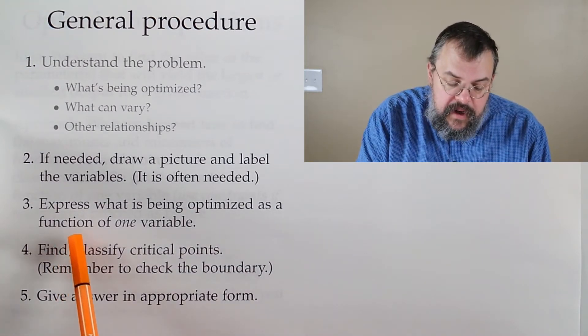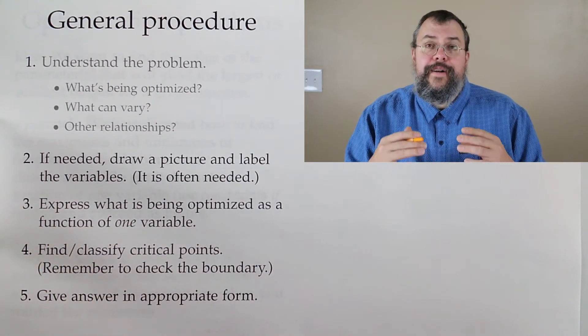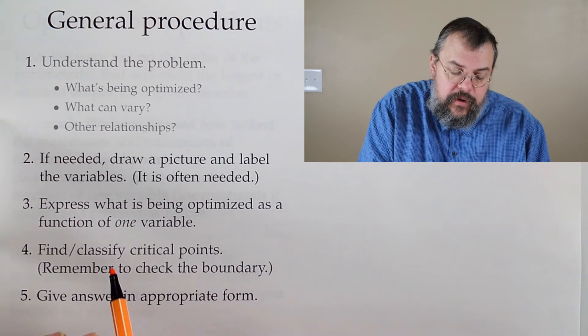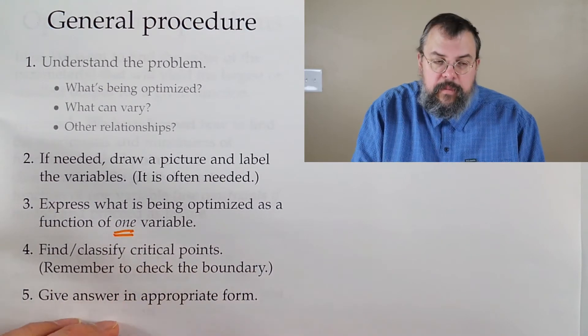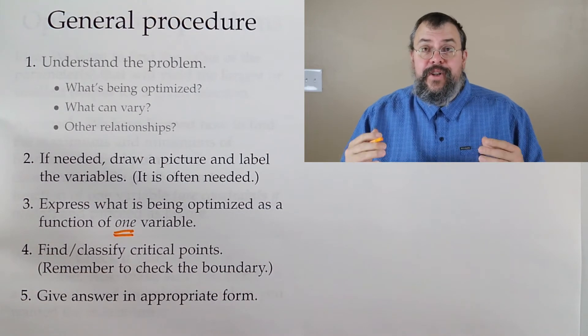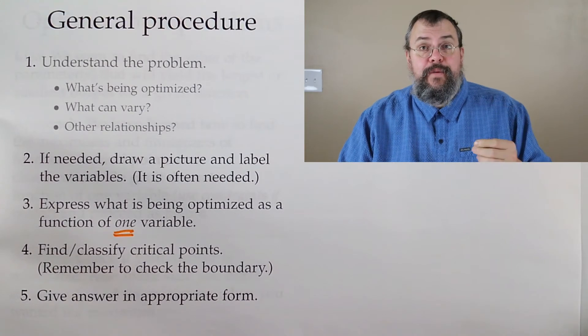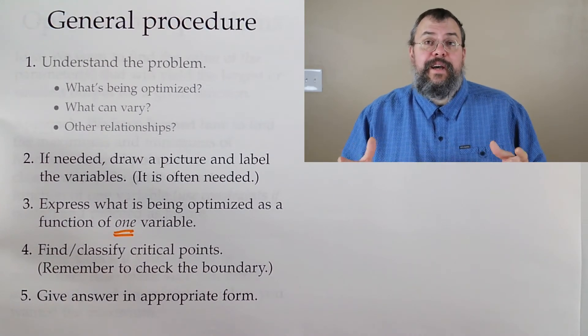Step three. This won't always apply to every problem, but when we're trying to optimize, we need to get down to one variable. We can only handle one thing varying right now. Eventually, as we work our way up, we'll get to multivariable calculus, and then we can have multiple things varying.